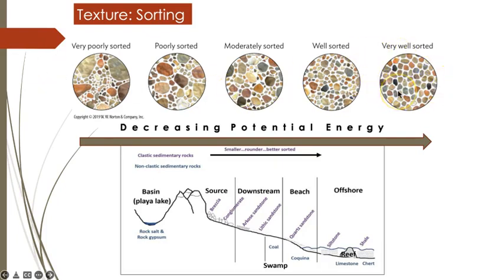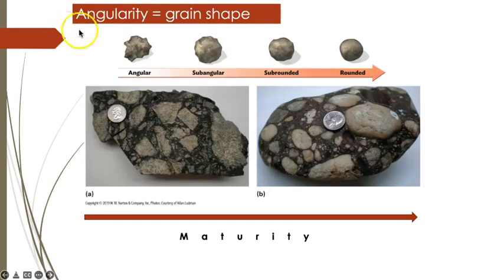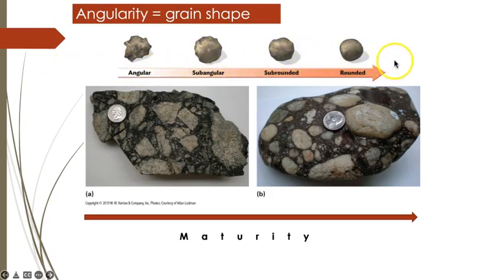Streams, which transport most of the sediment on Earth's surface, will deposit progressively more well-sorted sediment as stream flow slows. Angularity, or grain shape, reflects how much transportation grains of sediment have undergone. The greater the distance transported, the more rounded and more mature the grains. With increasing maturity, sediment becomes more homogeneous.